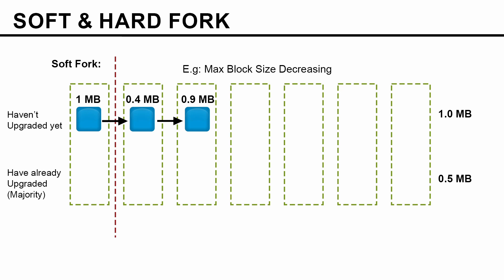Now another block was found by the first group and this time the block size is 0.9 megabyte. This block follows the old rule — limit of 1 megabyte — but it does not follow the new rule — limit of 0.5 megabyte. So this block is not accepted by the new network who have upgraded their software. They continue to mine their own block and find a block of size 0.5 megabyte, which follows the new rule. Now we kind of have a chain split — it looks similar to hard fork. However, the interesting part is that we have the majority of miners in the new network, since soft fork is only initiated by the majority.